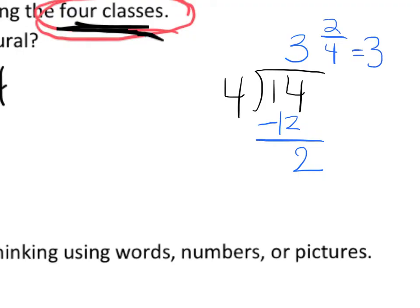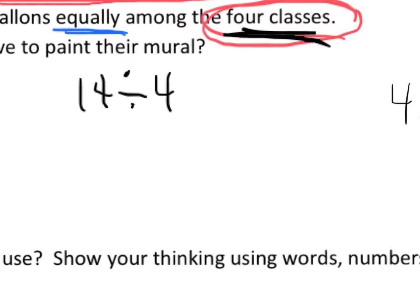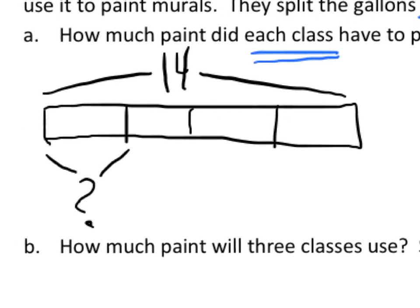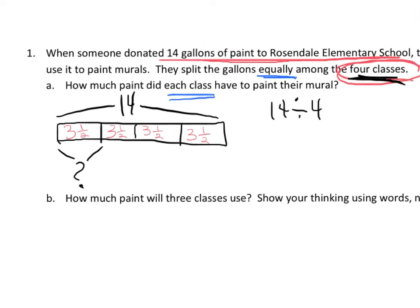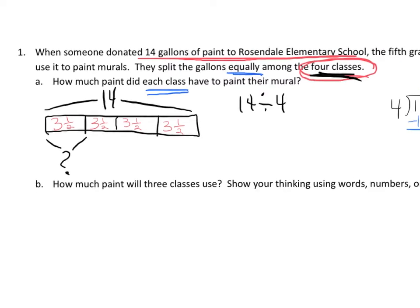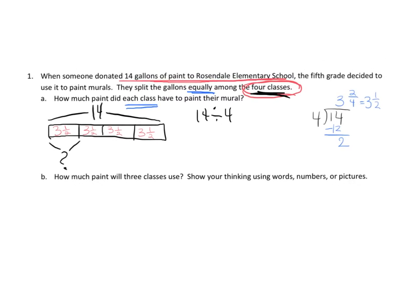So what does that mean? It means over here, each class gets 3 and a half gallons. So each one of these units is 3 and a half. And I'll zoom out. And there we go.